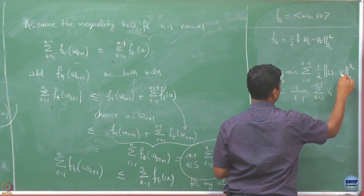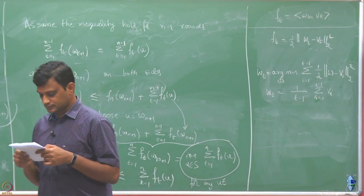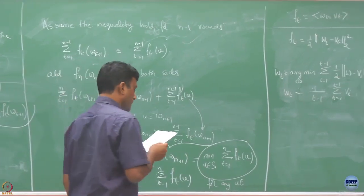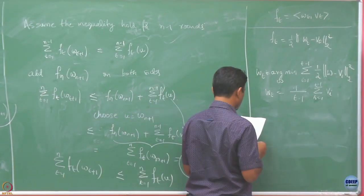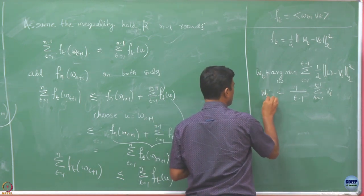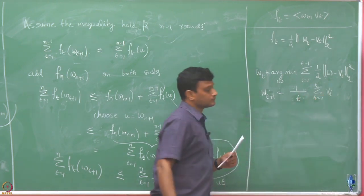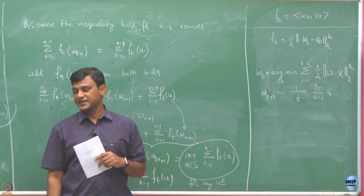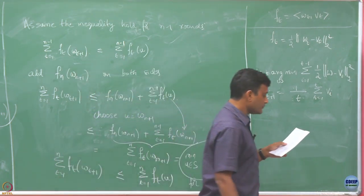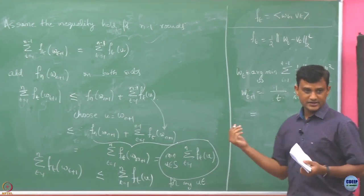So W_T is going to be the average of V_i's. And if I am interested in W_{T+1}, it is just the average of the first T terms. We are going to basically average the first T terms for the W_{T+1} prediction. Now this can be rewritten.